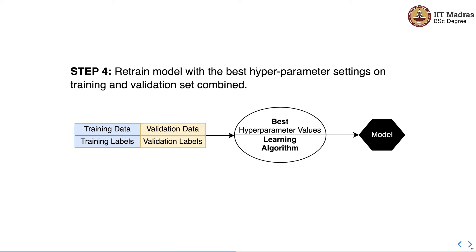In step four, we retrain the model with the best hyperparameter settings on the combined training and validation set. We combine training and validation sets to form a bigger training set and use that for training the learning algorithm, with the hyperparameter values set to the best values discovered in the previous step. This gives us a final model with hyperparameter values set to those found through the tuning process.